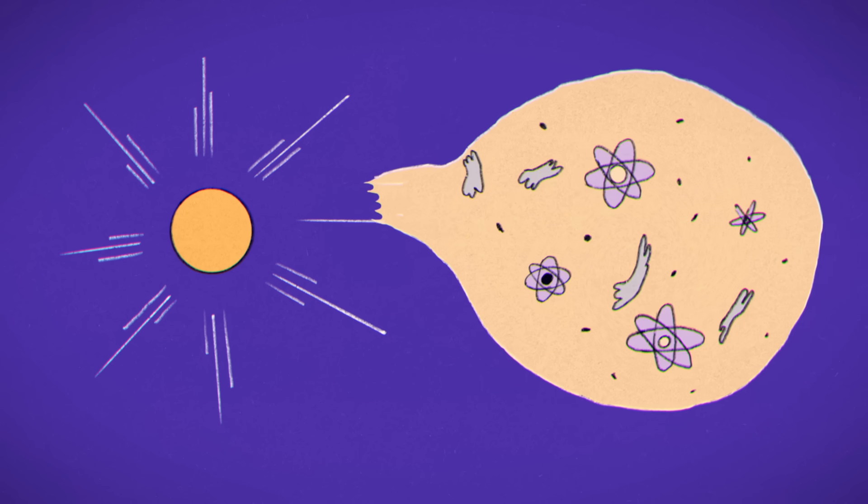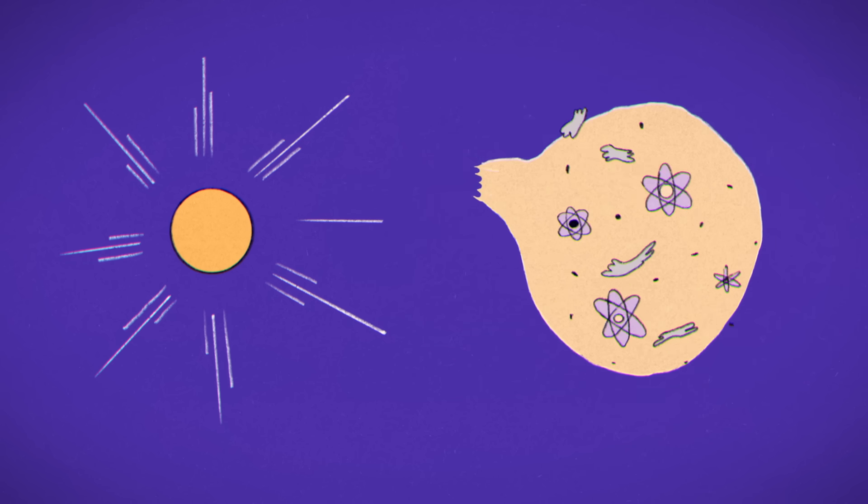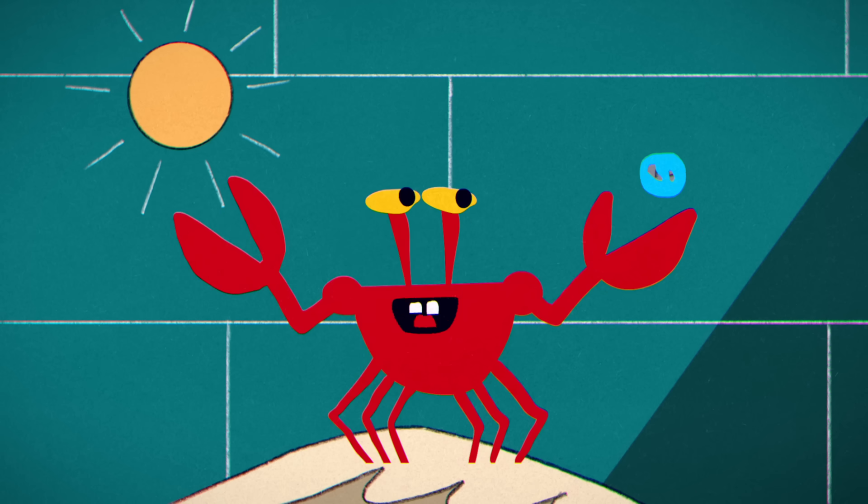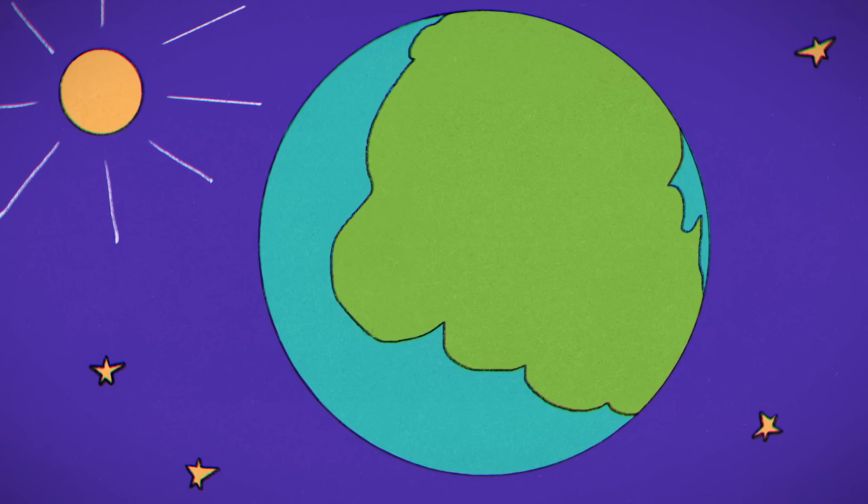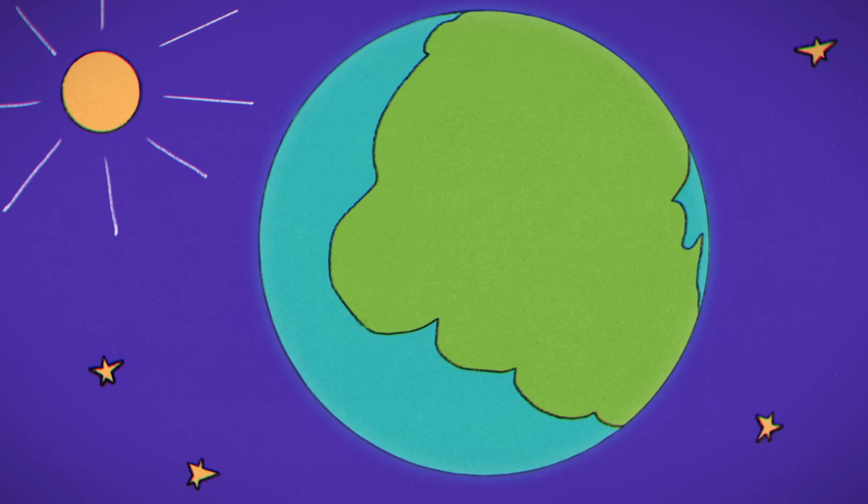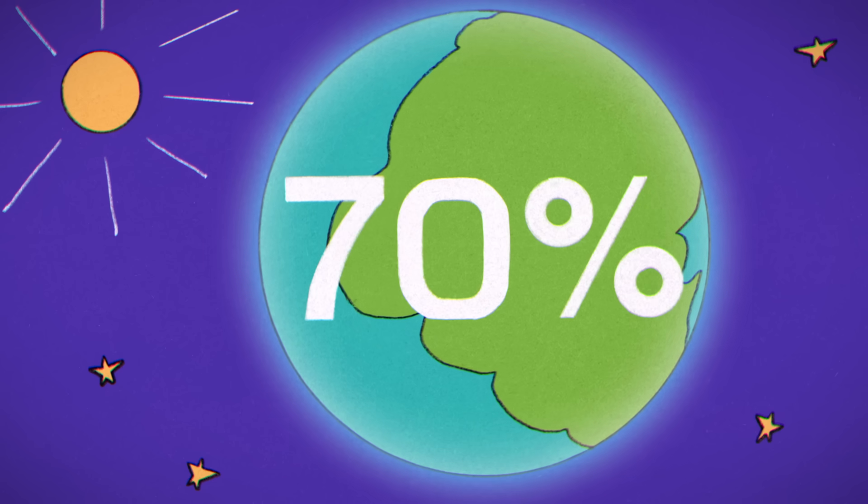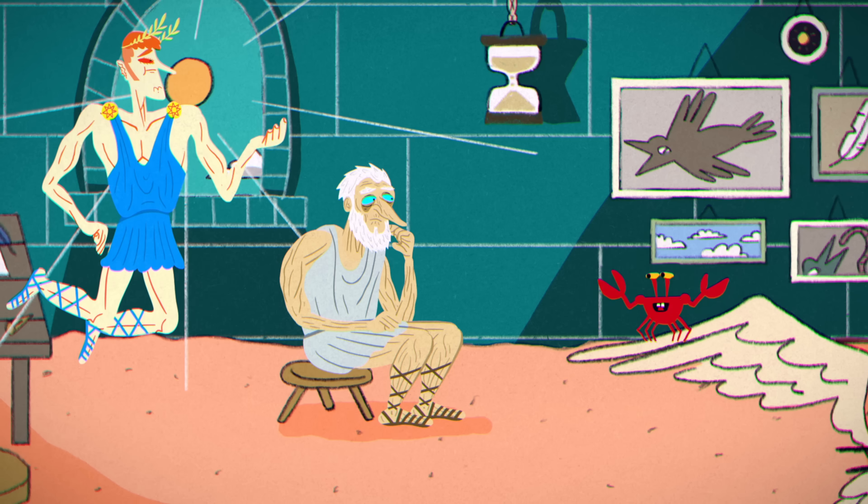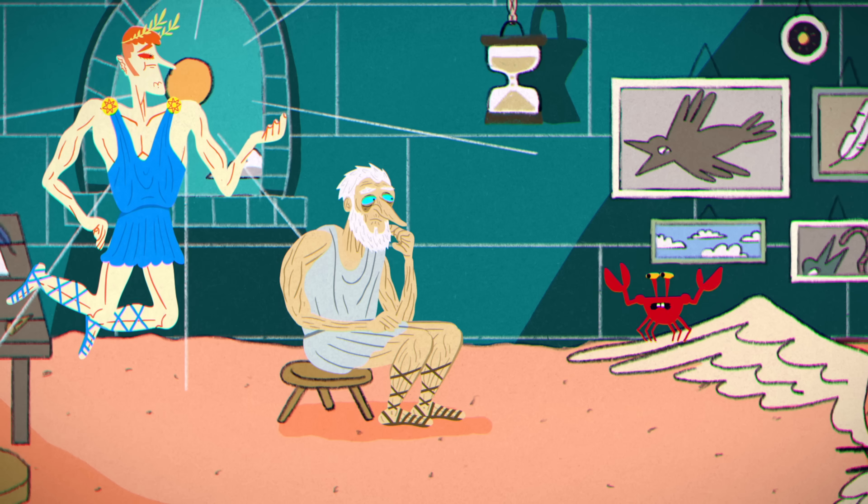Earth likely formed from the sun's leftover materials, at just the right distance for water to remain liquid, so life could evolve. The sun also helped generate Earth's atmosphere, which traps heat by absorbing approximately 70% of incoming solar radiation. All of this has fundamentally shaped life on Earth.